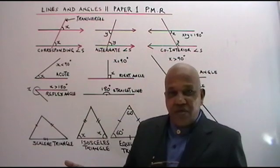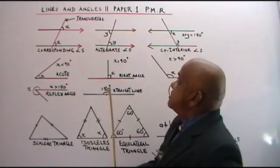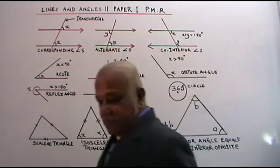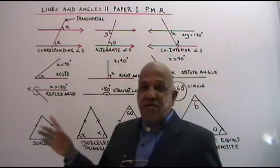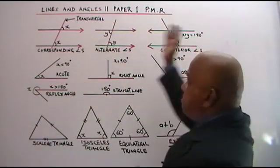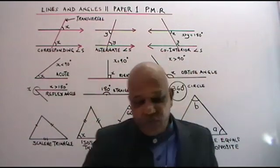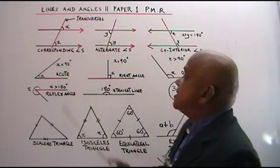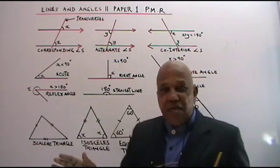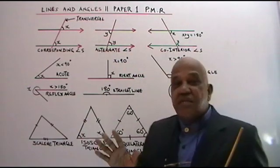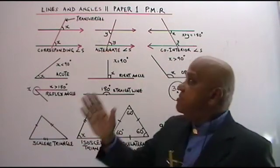When you open your Form 3 book, the first topic is Lines and Angles 2. Now, before you can answer PMR questions based on this topic, you need to know some basics. When you look at the notes in most books, you will see these three diagrams, but these three are not enough to answer PMR questions.